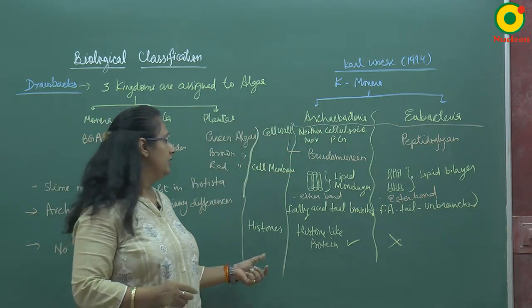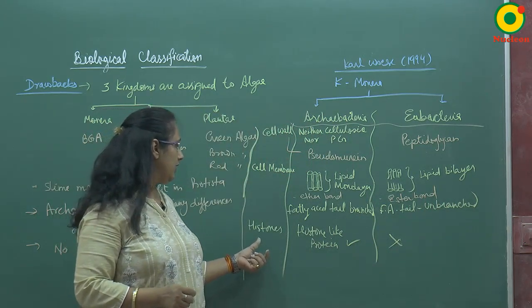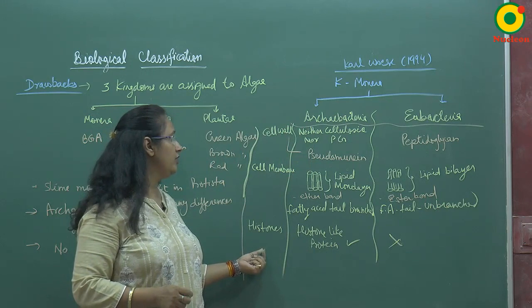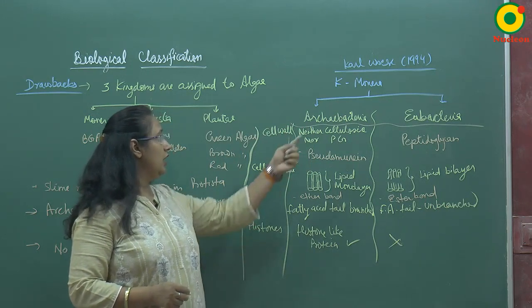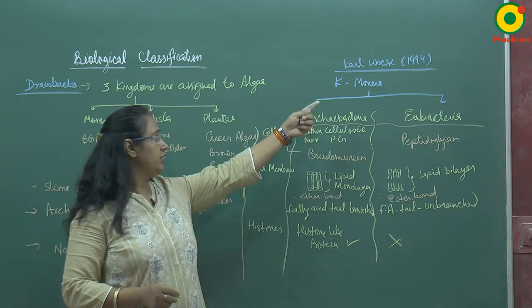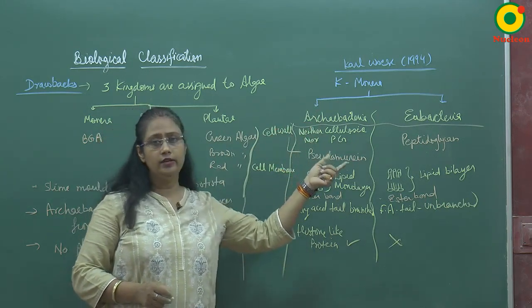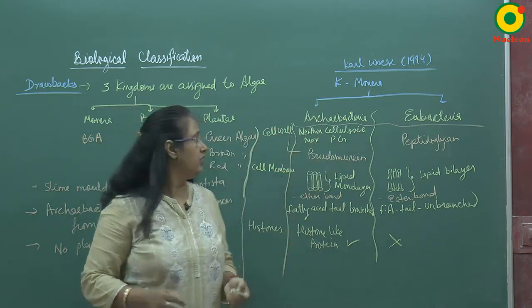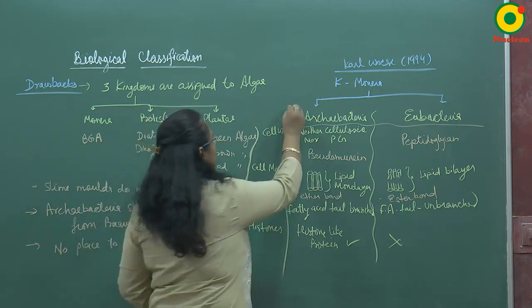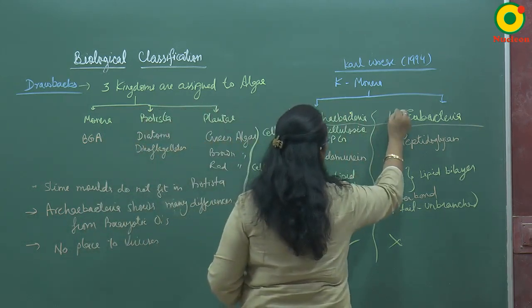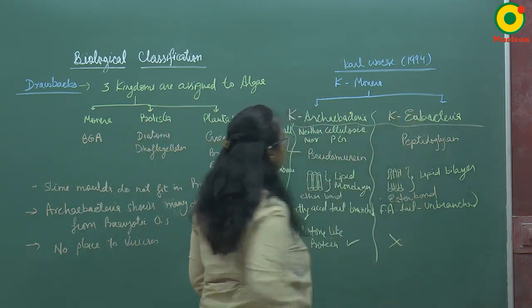These are the distinct characteristics on the basis of which Carl Woese divided kingdom Monera into two kingdoms: kingdom Archaebacteria and kingdom Eubacteria.